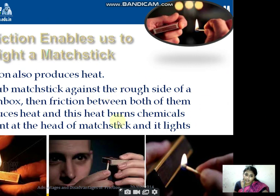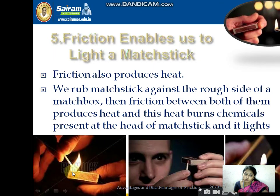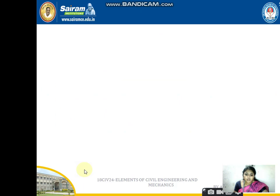One more example: friction enables us to light a matchstick. A matchstick and matchbox — one side is very rough. When you rub it, you get fire on the other side because of the heat. Burning happens only because of friction — the friction between both sides produces heat and makes the head burn. These are the basic introductions about friction. In the next presentation I will be teaching the coefficient of friction, angle of repose, angle of friction, cone of friction, and basic numericals. Thank you.